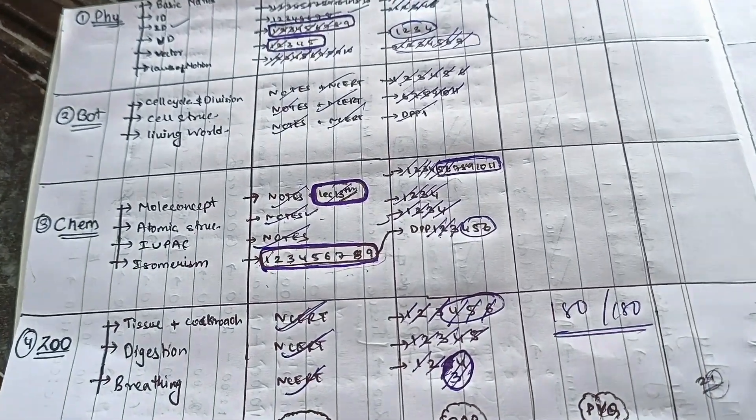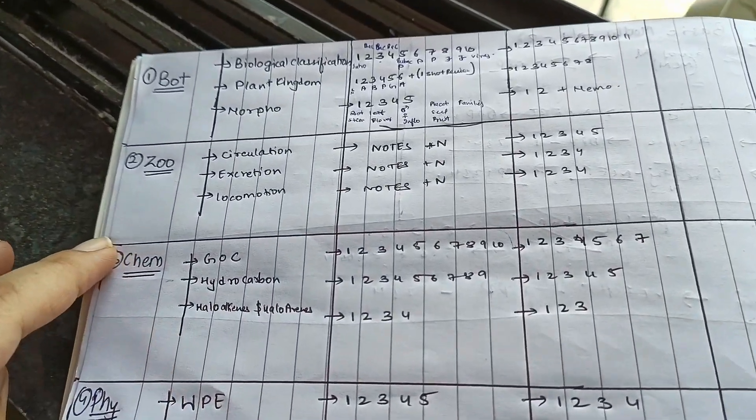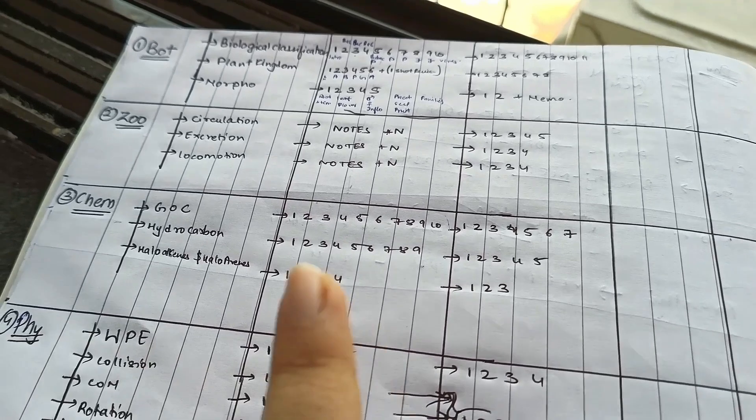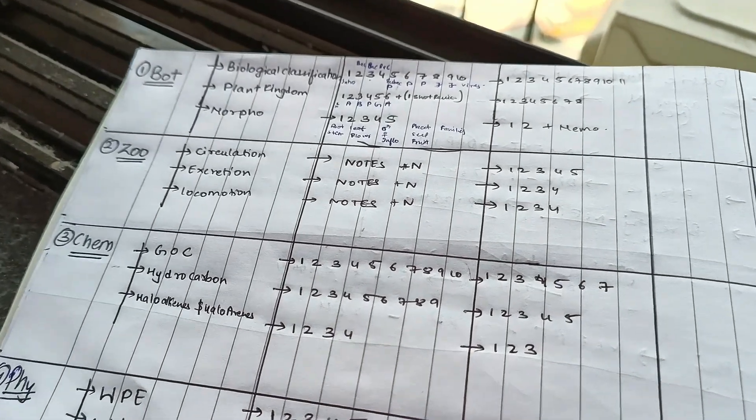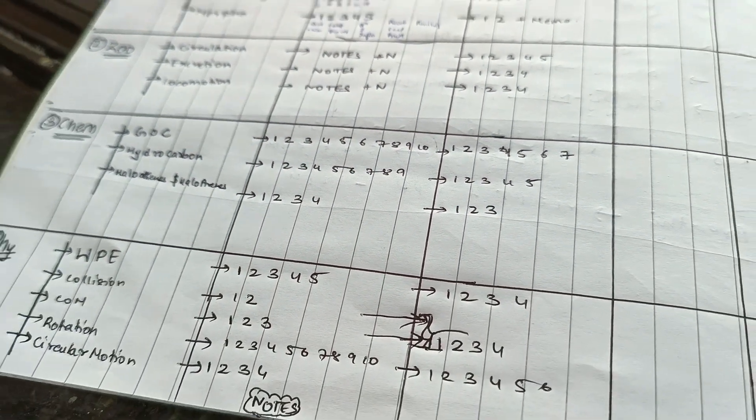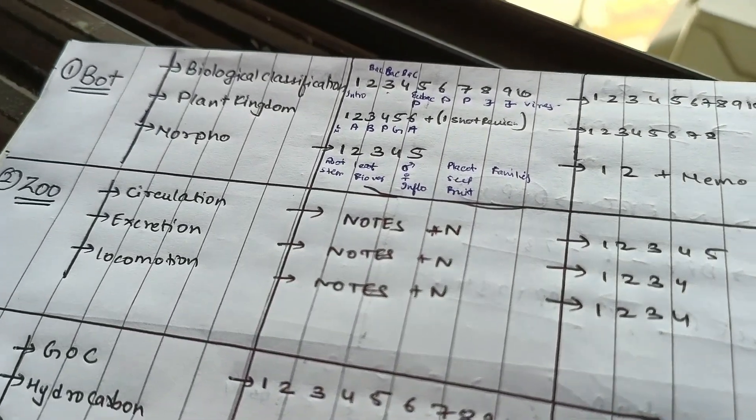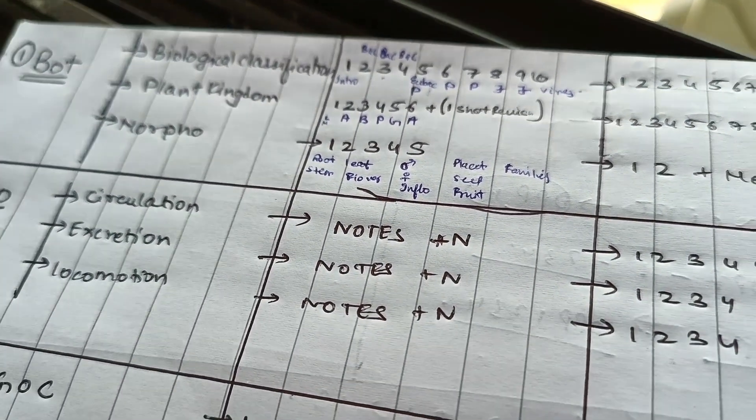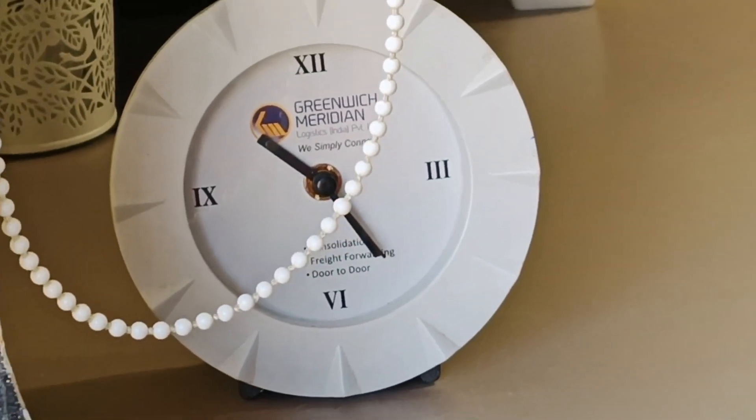I thought I would score 180 out of 180 in zoology, but my score was 166. But never mind, I'll try this time. For the change, I've also written the number of lectures and the number of DPPs in the respective chapters, and I've divided my whole week according to it so that I'll be aware of how many lectures or DPPs I've revised and how many are left to do. It's 10:25 right now and we should start studying.